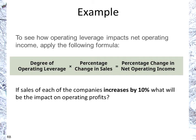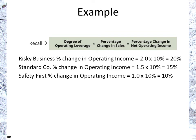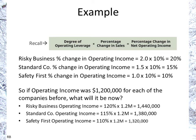If each company increases sales by 10%, the impact on operating profit is: Risky Business has a DOL of 2 times 10%, so a 20% increase in operating income. Standard Co gets 15%, and Safety First gets 10%. Since operating income was $1.2 million, Risky Business would now have 120% of $1.2 million — that's $1.44 million. Standard Co would have 115%, so $1.38 million. And Safety First would have 110%, so $1.32 million.